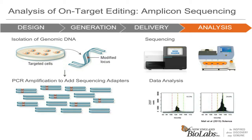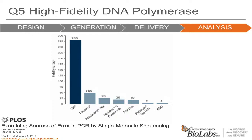Off-target detection is still difficult and expensive. There are two methods that are currently seen to be preferred: CIRCLE-seq and SITE-seq. CIRCLE-seq involves circularizing fragmented DNA, removing linear fragments, then digesting the remaining circles with Cas9 and ligating adapters to the Cas9 cut sites for sequencing. SITE-seq involves digesting genomic DNA with Cas9 and uses selective enrichment to identify Cas9 cleavage sites. We recommend Q5 polymerase for amplicon sequencing. Q5 polymerase fidelity is 280 times the fidelity of Taq and about six times higher than Phusion polymerase, as discussed in an NEB publication entitled 'Examining Sources of Error in PCR by Single Molecule Sequencing.'